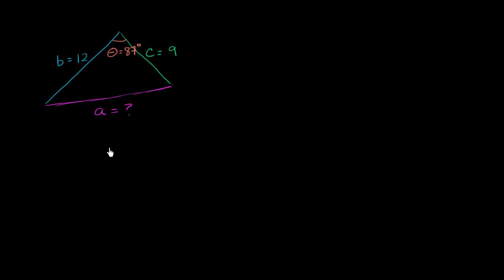Well, lucky for us, we have the law of cosines, which gives us a way for determining a third side if we know two of the sides and the angle between them. The law of cosines tells us that a squared is going to be equal to b squared plus c squared.